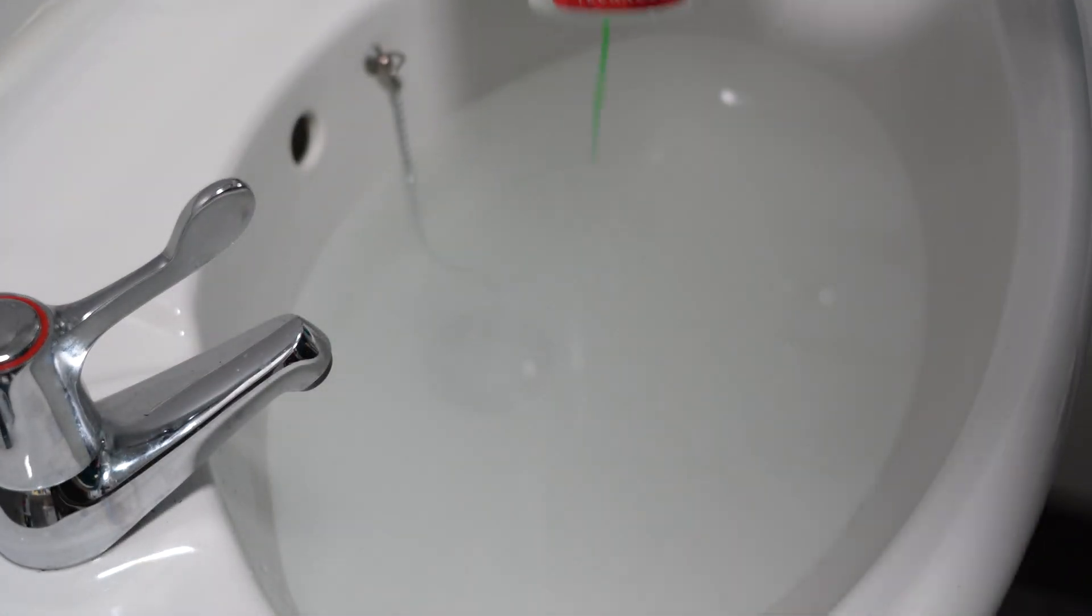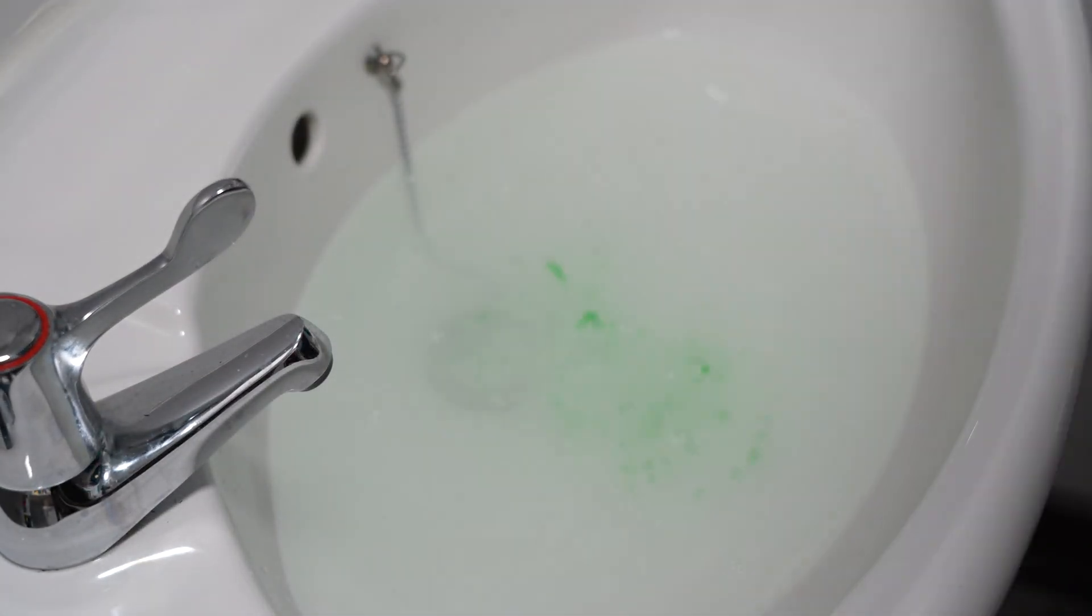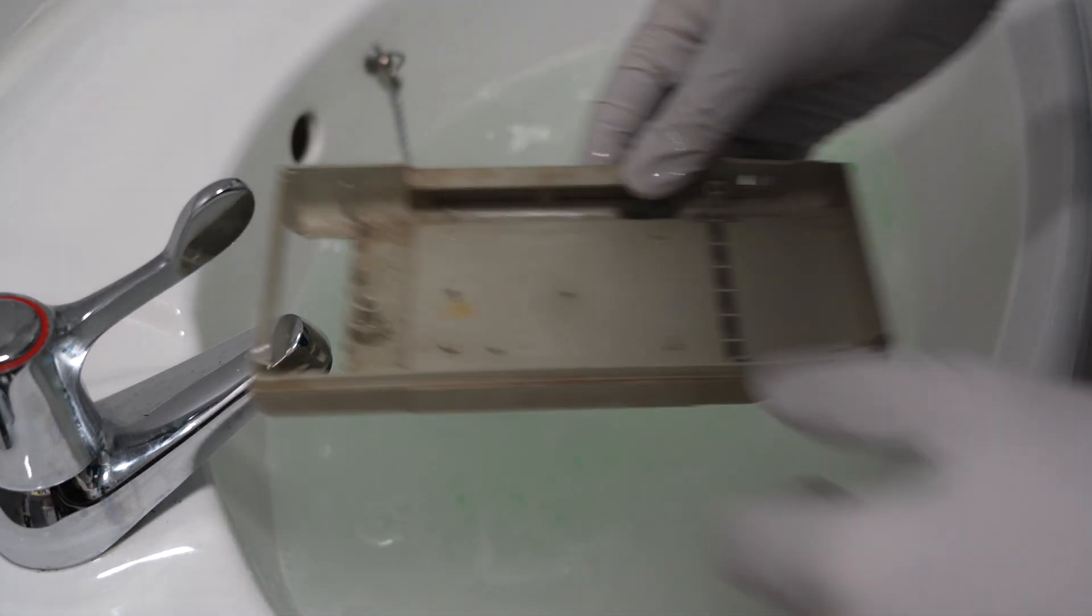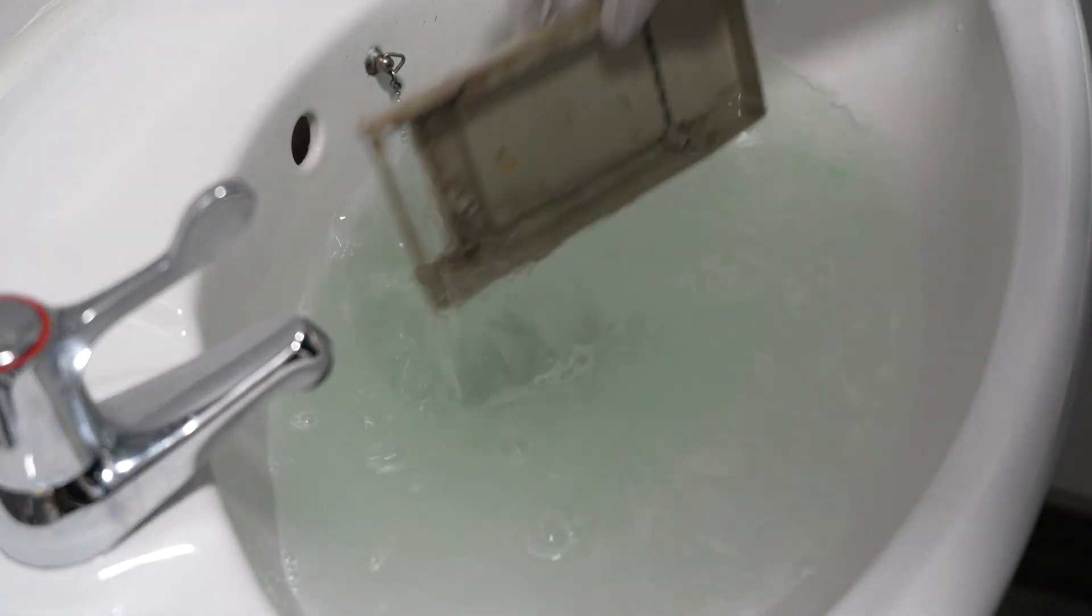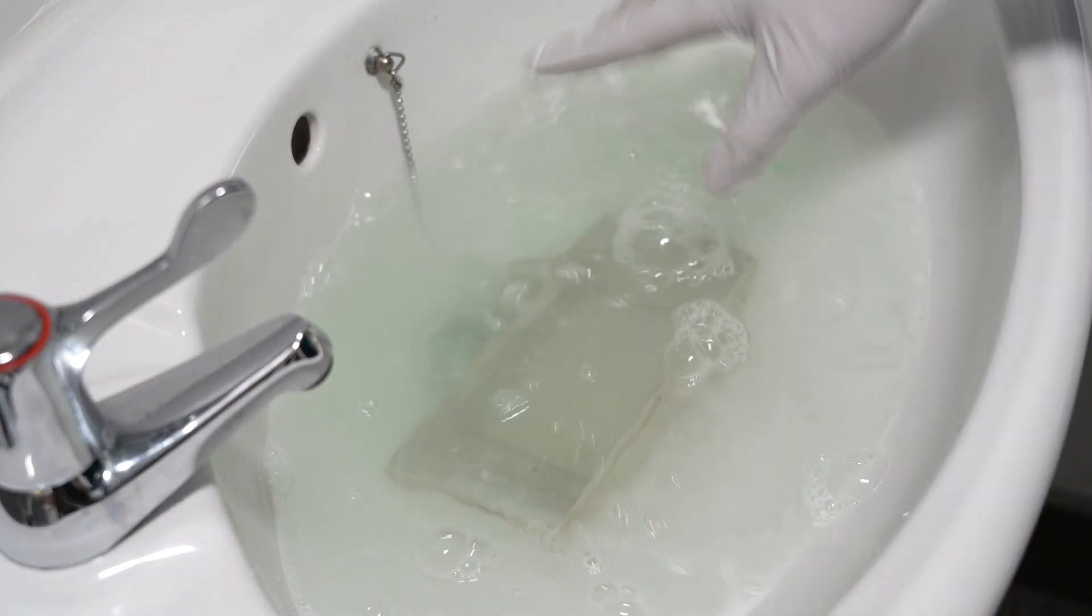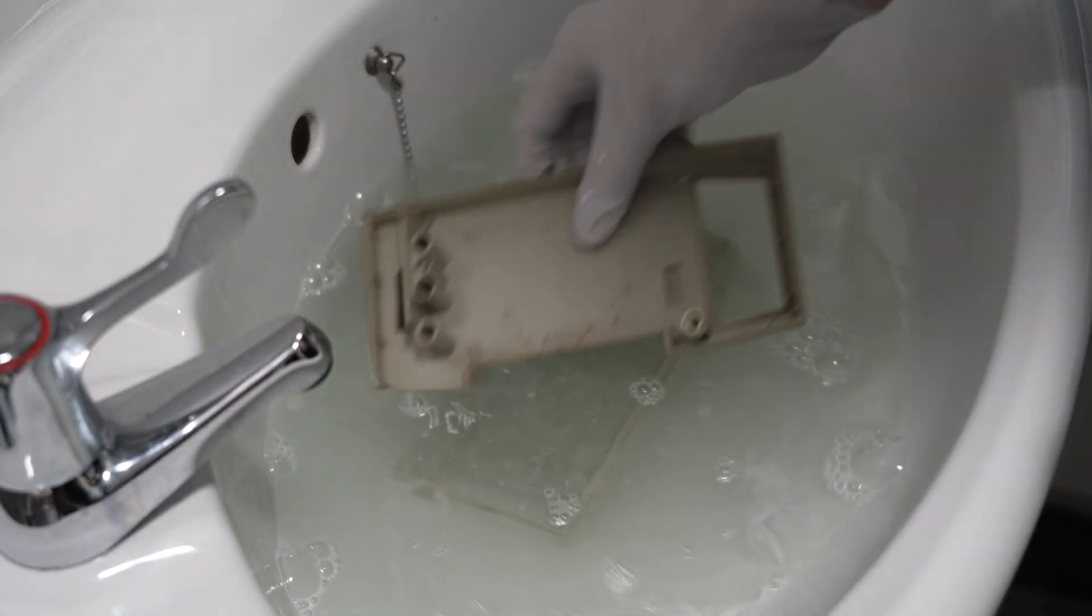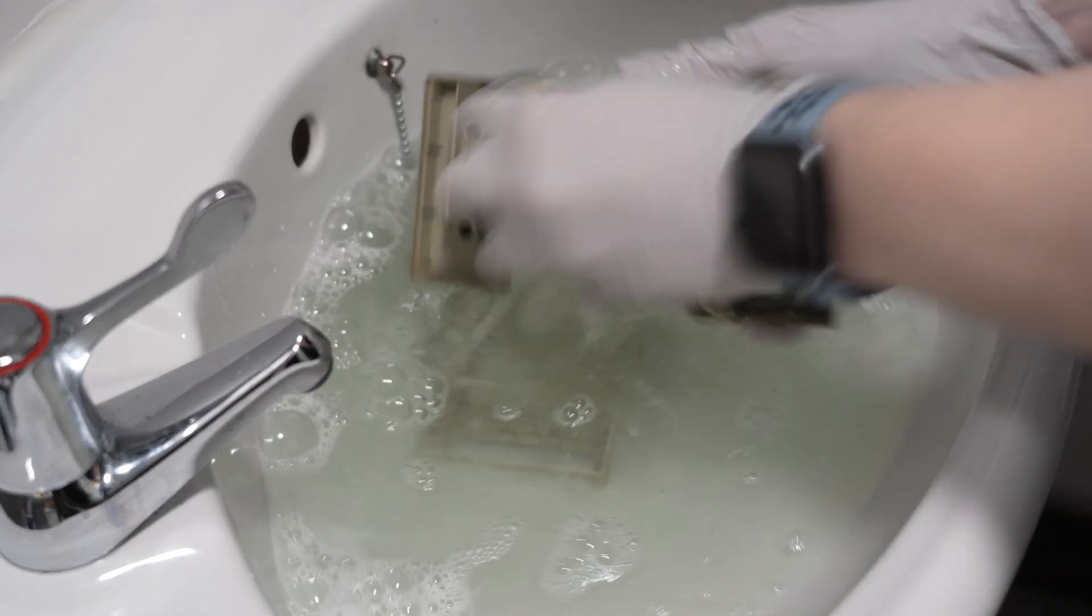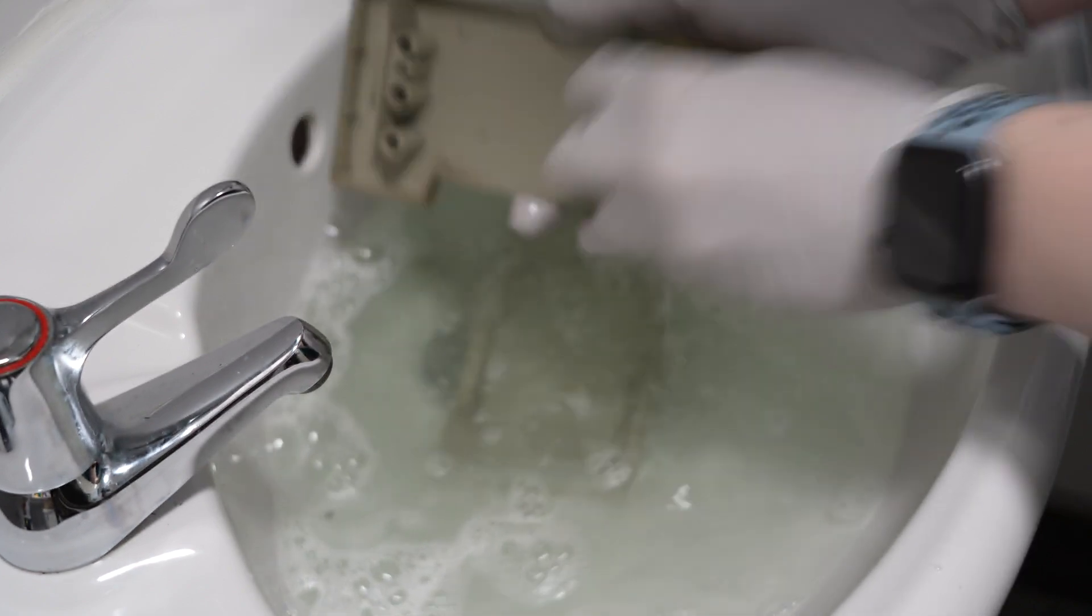Now what I've done here is just got some hot water and dish soap in my sink. Just going to dunk everything in, let it soak for a few minutes, and start scrubbing with a sponge. You can see just how dirty that water is getting already.